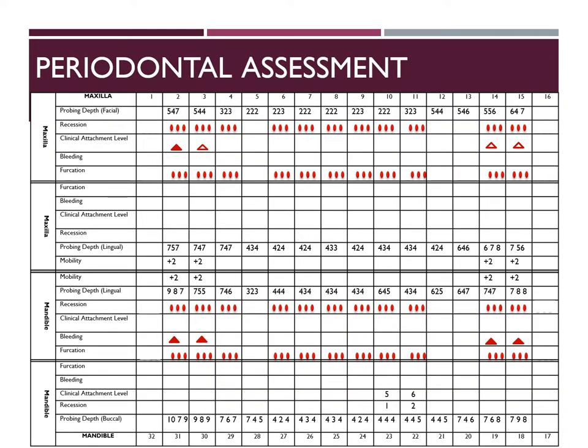On his periodontal assessment, he has generalized bleeding on most of his teeth. There are a couple of mobility areas as well as furcation areas. The bleeding occurs on most of the teeth and probing depths are well over 4 mm. There are some pocket depths on teeth number 30 and 31 that include pockets of 8, 9, and 10 mm. There is also localized recession on teeth number 22 and 23 from 1 to 2 mm. There is also mobility on teeth number 2, 3, 14, 15, 18, 19, 30, and 31.